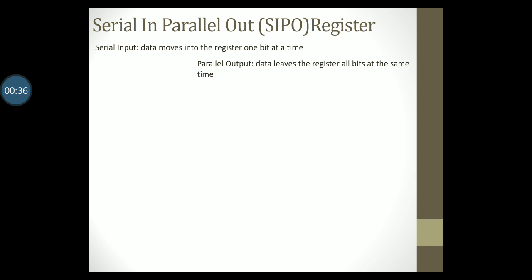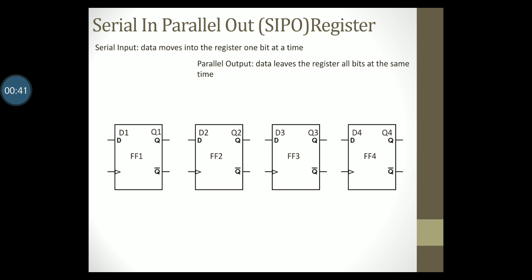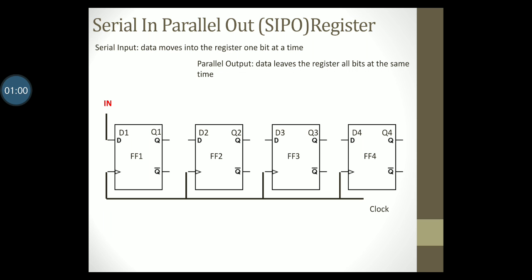To design a four-bit SIPO register we will require four flip-flops. As in all registers, the same clock signal will be given to all the four flip-flops making up this register. Data will enter this register one bit at a time in a serial manner, so the input will be given via the first flip-flop. To allow data to move into this register, Q1 will be connected to D2, Q2 will be connected to D3, and Q3 will be connected to D4.